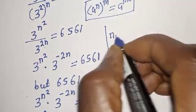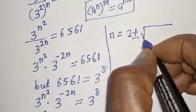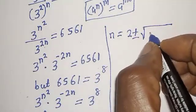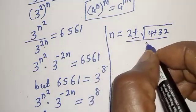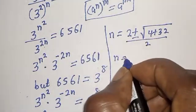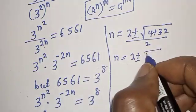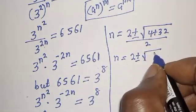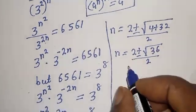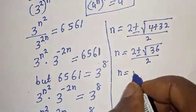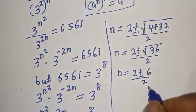Then n equals 2 plus or minus square root of 4 plus 32, over 2. That gives us n equals 2 plus or minus square root of 36, over 2. The square root of 36 is 6, so n equals 2 plus or minus 6, over 2.